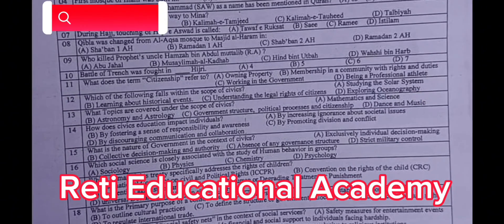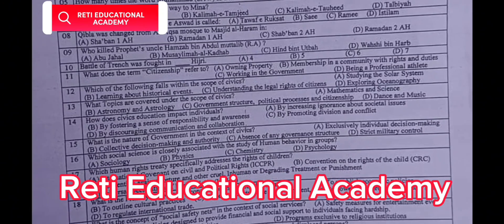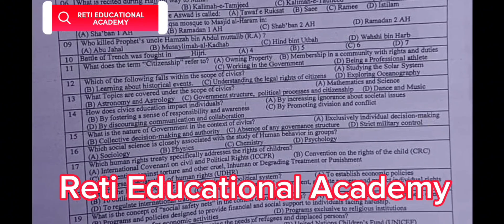Question number 11: What does the term citizenship refer to? A. Owning property. B. Membership in the community with rights and duties. C. Working in the government. D. Being a professional athlete. The correct answer is B: Membership in a community with rights and duties.